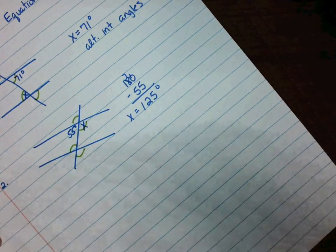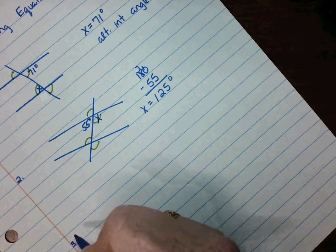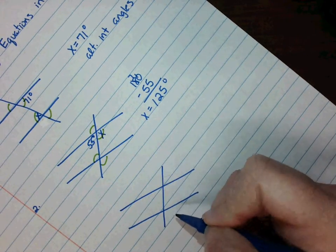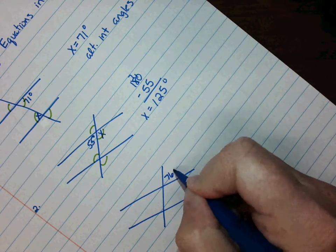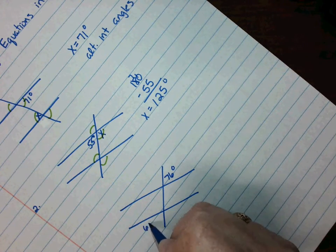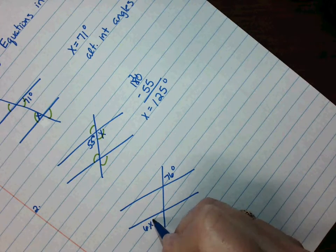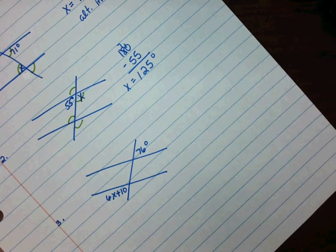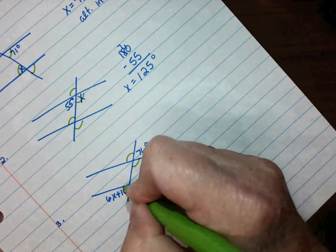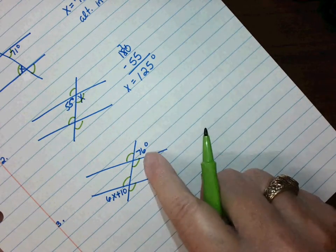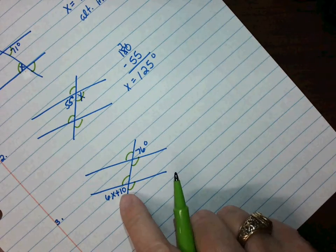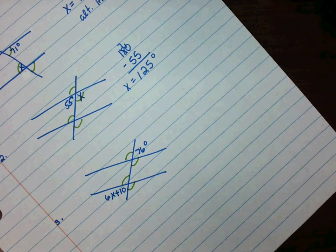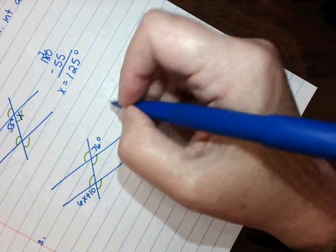We have this diagram, looks like this, and it says that this angle is 76 degrees and this one is 6x plus 10. Alright, so if I do my arcs, I'm going to do top to bottom again. I see that 76 and the 6x plus 10, they're both unmarked, they are the same. They're also alternate exterior angles.